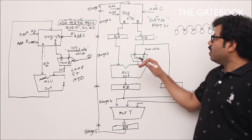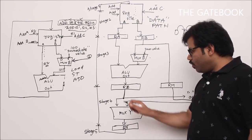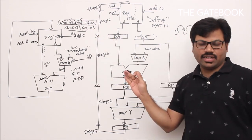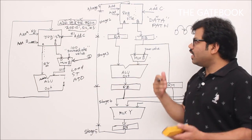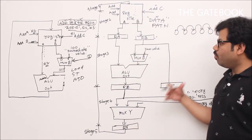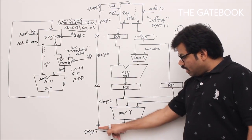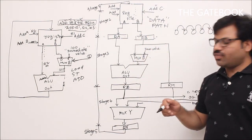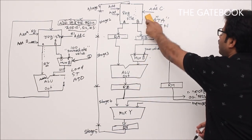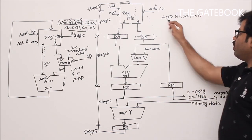Apart from the register file and ALU components, we also have an extra component. After the ALU operation, we hold the data in a temporary register RZ. That register becomes the input for the next stage. Now let us take the addition example again: ADD R1, R2, #100 with immediate addressing. Stage 1 (fetch) is handled by a separate circuit not discussed here. This circuit handles stages 2 through 5.